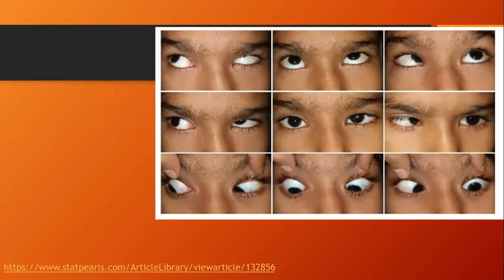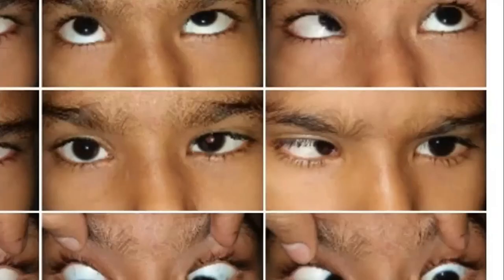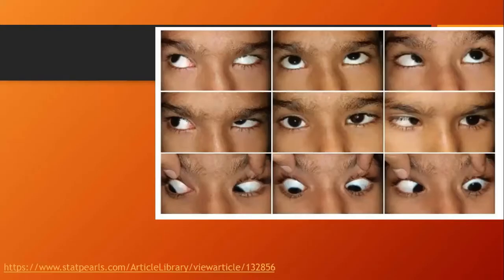On dextroversion there is upshoot of the left eye along with narrowing of the palpebral fissure, and widening in the right eye. There is also slight limitation of adduction in the left eye — so three signs in the left eye: narrowing, upshoot, and limitation. On levoversion there is limitation of left eye abduction. This is a case of Duane type 3 in the left eye with upshoot and esotropia in primary position.